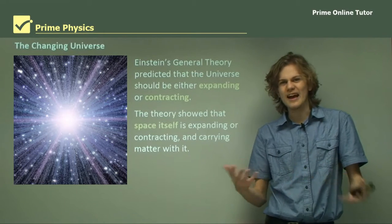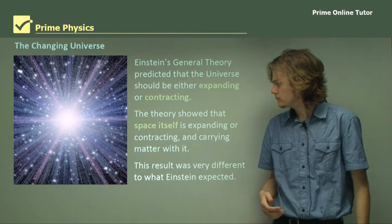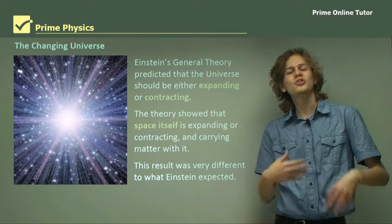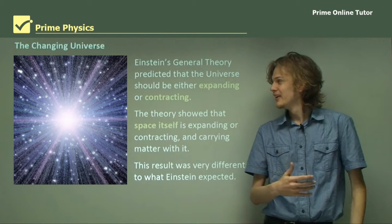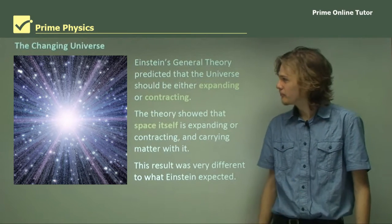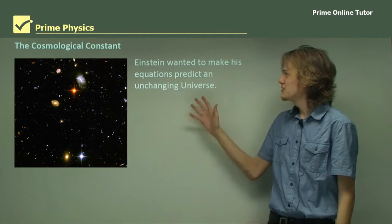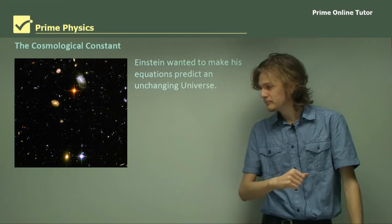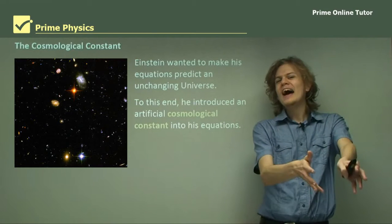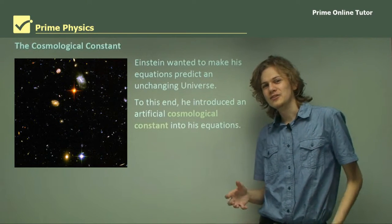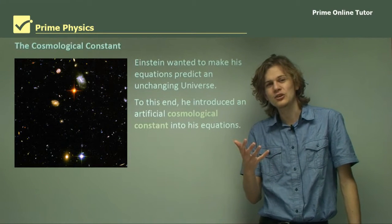Because particles of matter like atoms and galaxies just happen to be in that space, they get pulled further apart and the universe gets bigger in that mechanism. This result was very different to what Einstein expected, because of course he believed in a static universe. He believed that his equations that he had discovered would tell him that the universe was unchanging. Because he didn't like this result, he decided to do something a little questionable. Einstein wanted to make his equations predict an unchanging universe, and so what he did is he introduced a constant to his equations. He called it the cosmological constant.